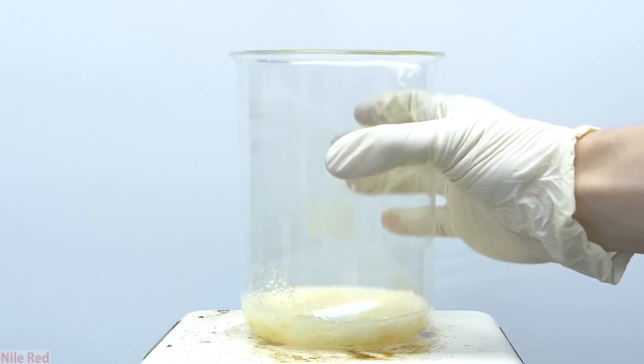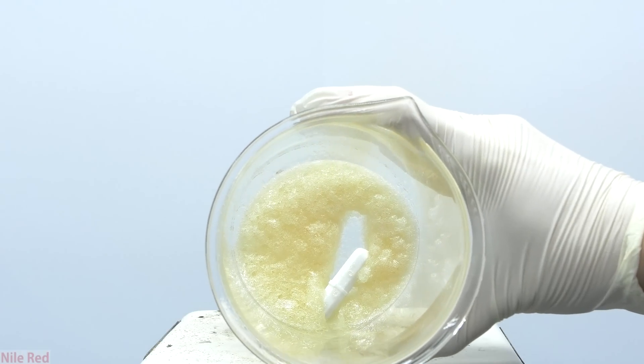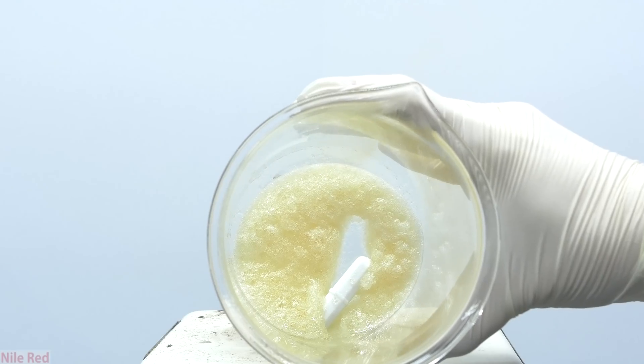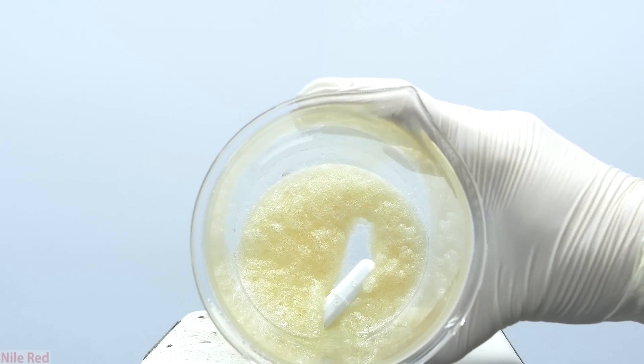As the solution cools, it will eventually solidify as oxalic acid starts to precipitate out. The oxalic acid here still looks a little bit yellow due to the presence of nitrogen dioxide, but that will eventually go away.